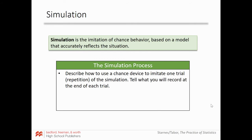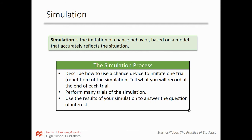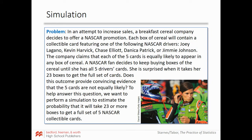When simulating a process, you want to describe how to use a chance device to imitate one trial and record what happens at each trial. For flipping a coin, I use a random number generator from one to two — one is heads, two is tails. Each run of the generator is one trial. I perform many trials, keep pressing enter to get the next random number, record the result each time, and then use my results to answer the question of interest. For example, after 100 trials I might get 52 heads and 48 tails.